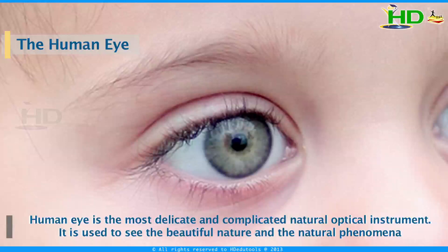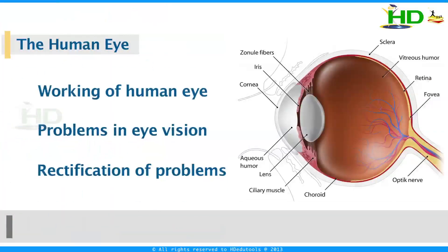It is used to see beautiful nature and natural phenomena. In this topic we are going to discuss how our eye works, how it can see, what are the different problems related to eye, what are the different visions related to the eye — these are the things we are going to discuss today.